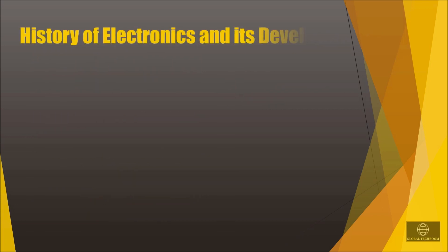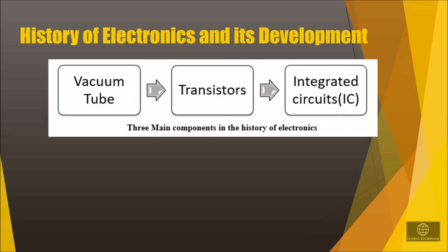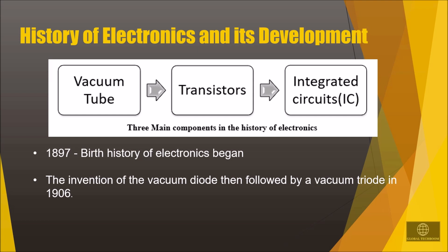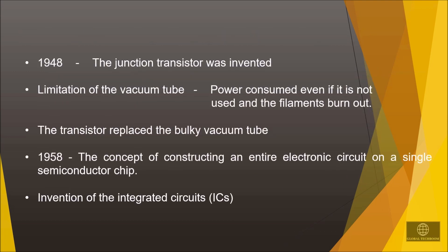Let's move on to the history of electronics and its development. The three main components in the history of electronics are the vacuum tube, the transistor, and the integrated circuit. The birth of electronics began in the year 1897 with the invention of the vacuum diode, then followed by the vacuum triode. A major limitation of the vacuum tube was the power consumed even when not in use, and the filaments would burn out. So in 1948, the transistor was invented, replacing the bulky vacuum tube. Then later in 1958, the concept of constructing an entire electronic circuit on a single semiconductor chip was invented. This invention of integrated circuits created an outstanding change in electronic circuits and also reduced the size, cost, and weight of electronic devices.